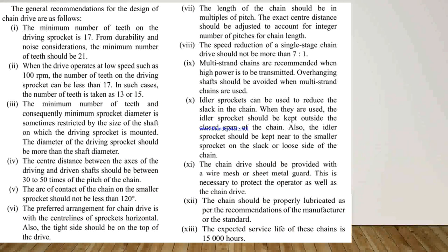The general recommendations for the design of chain drives are as follows. First, the minimum number of teeth on the driving sprocket is kept at 17. For durability and noise considerations, the minimum number of teeth should be 21. When the drive operates at low speed such as 100 rpm, the number of teeth on the driving sprocket can be less than 17, and in such cases the number of teeth is taken as 13 or 15. The minimum sprocket diameter is sometimes restricted by the size of the shaft on which the driving sprocket is mounted; the diameter of the driving sprocket should be more than the shaft diameter.